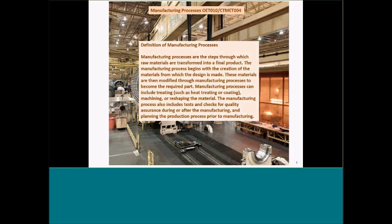If you think of a manufacturing process, it begins with the creation of materials from which the design is made. Once you have these materials, you modify those per design, and then you have the process to machine, process, or fabricate the part. That may include heat treating, coatings, machining, and reshaping the material. Of course, we'd like to have assessment verification with quality tests and checks. We'll also talk about the planning of the process prior to manufacturing.